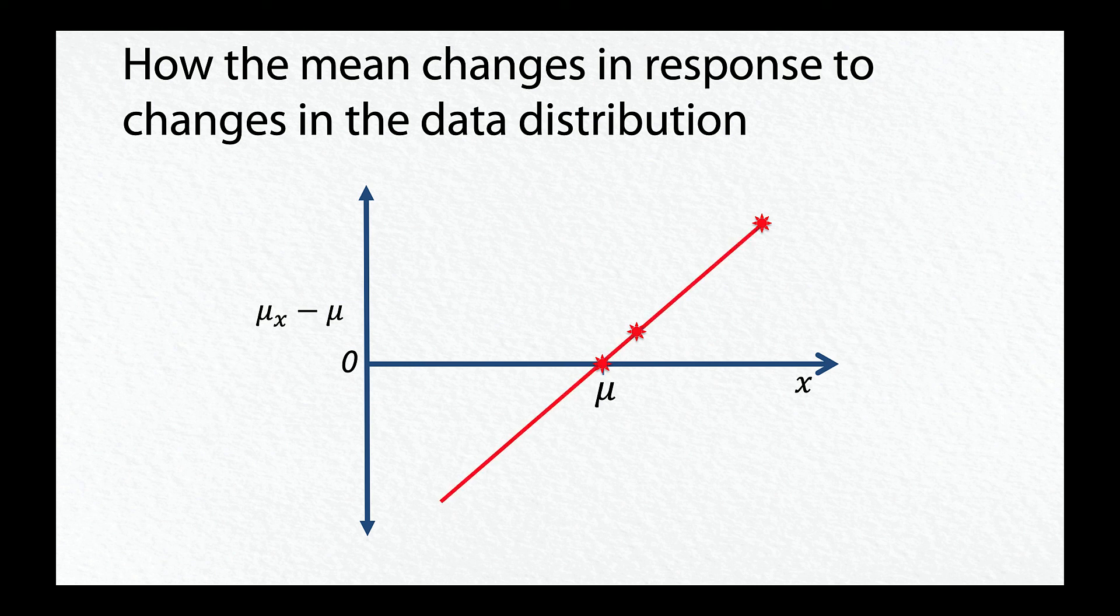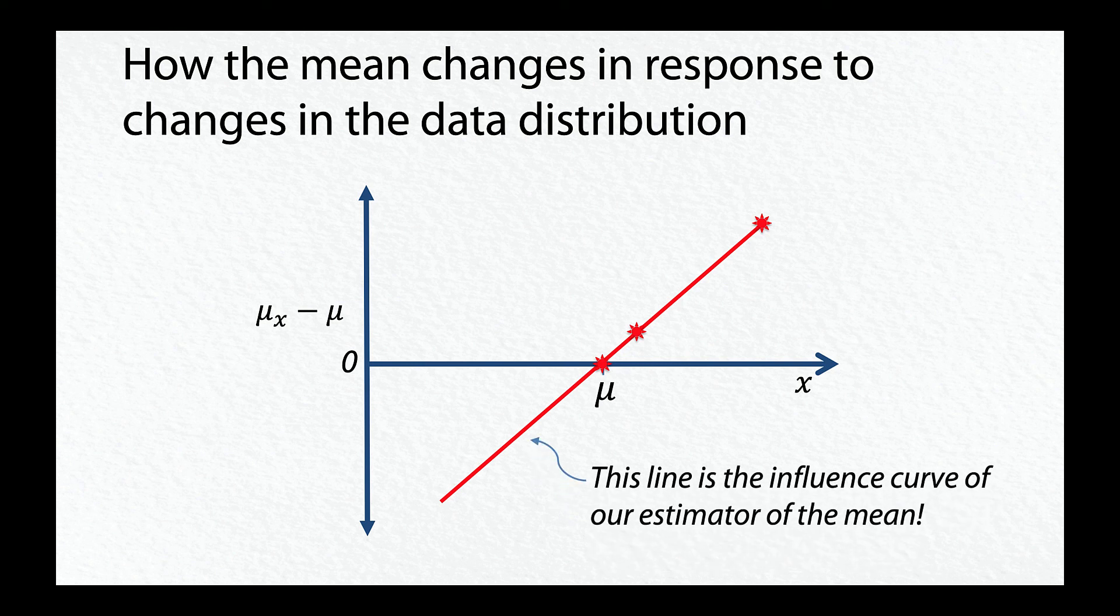The line through the points is the influence curve of our estimator of the mean. It is easy to see that the estimator of the mean is quite sensitive to perturbations in the outlying parts of the distribution.